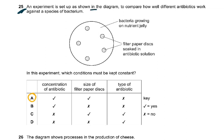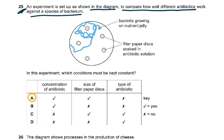Question 25: an experiment is set up to compare how well different antibiotics work against a species of bacteria growing on a plate. Filter paper discs are soaked in antibiotic solution. Which conditions must be kept constant? The concentration of the antibiotic solution, the size of the filter paper disc, and the type of antibiotic.